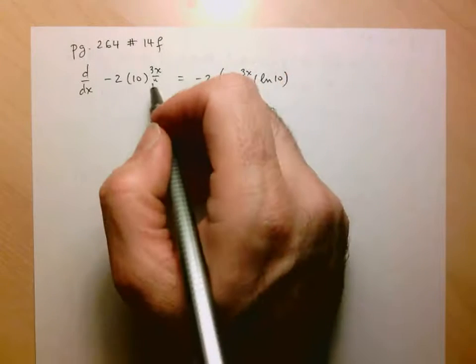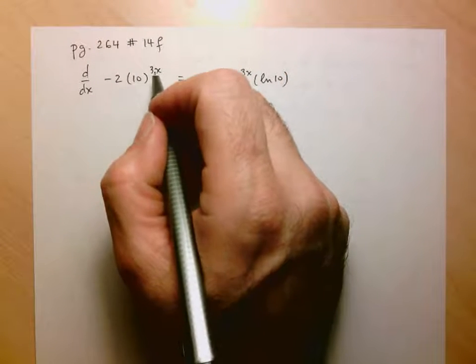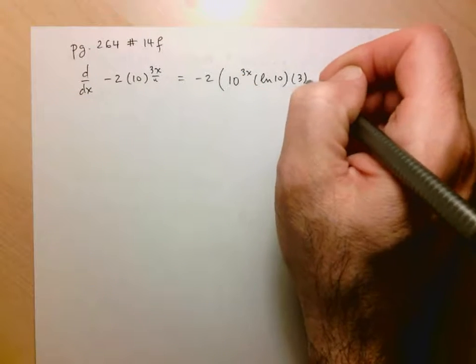But of course, now I have to multiply that by the derivative of u with respect to x, and the derivative of 3x is just equal to 3.